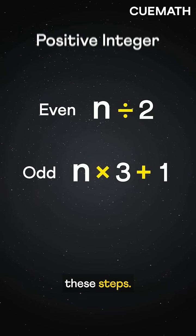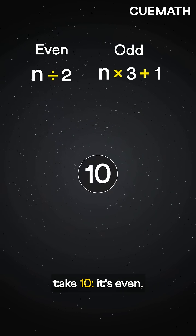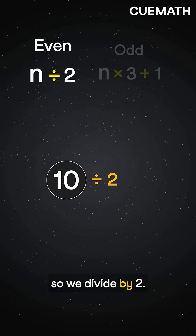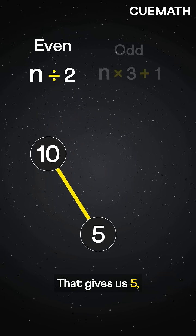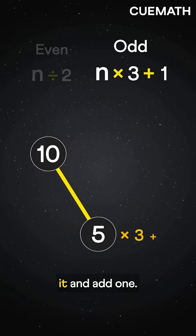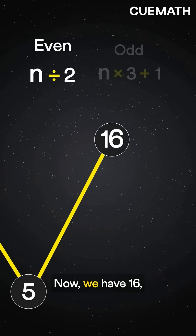Then keep repeating these steps. For example, if we take ten, it's even, so we divide by two. That gives us five, which is odd, so we triple it and add one. Now we have sixteen,